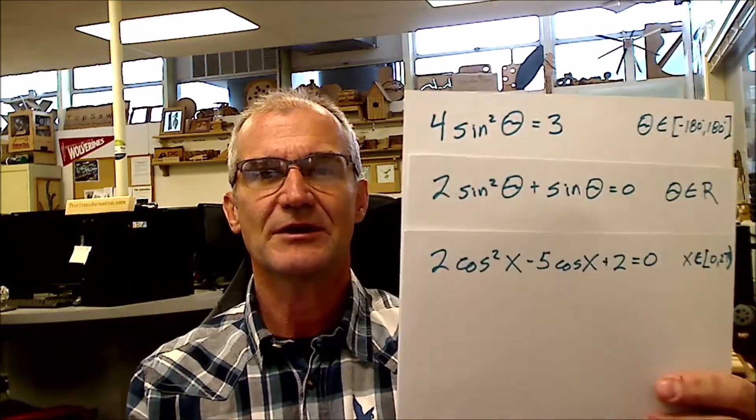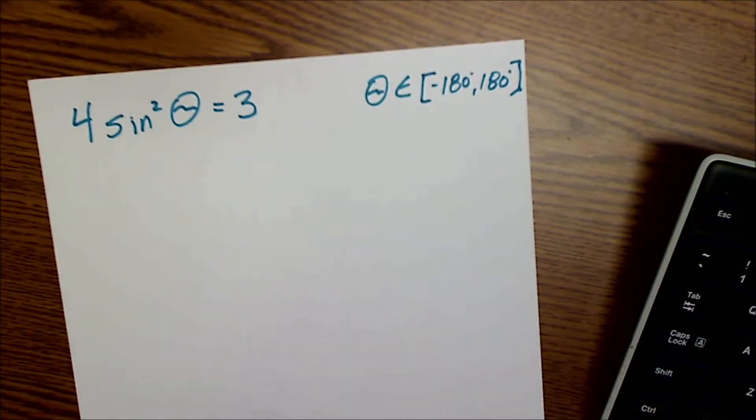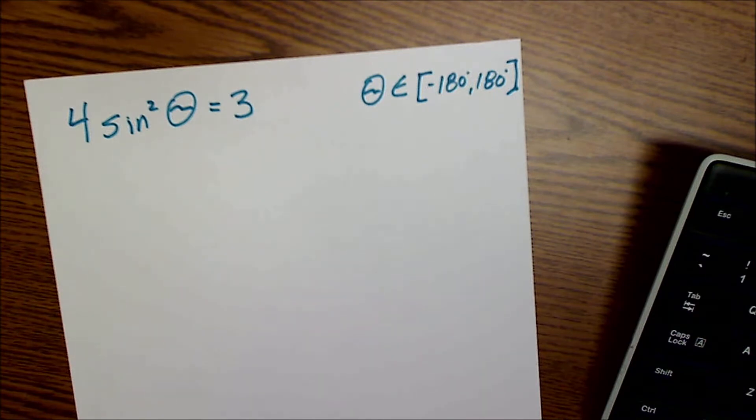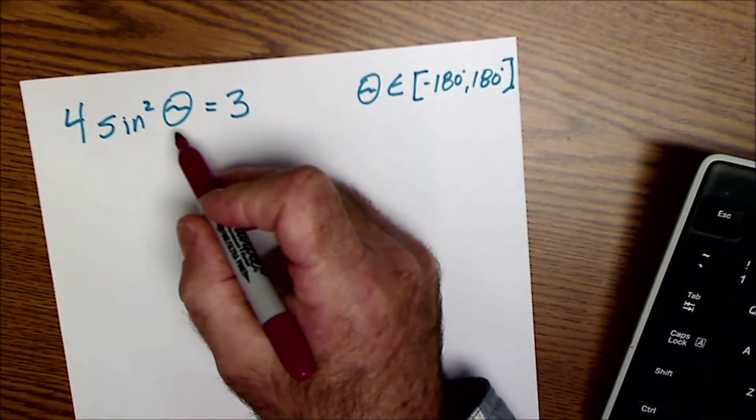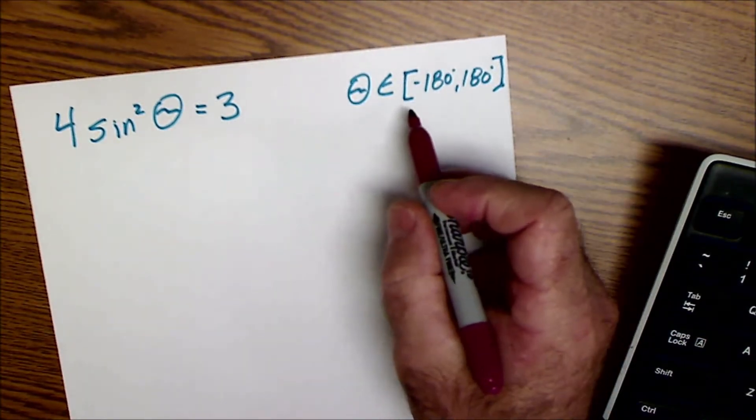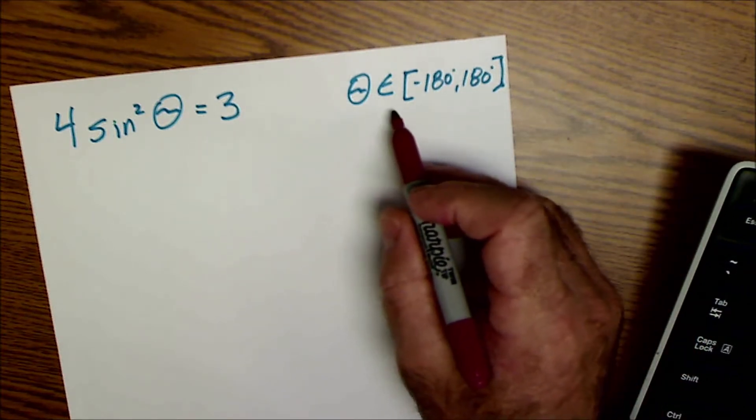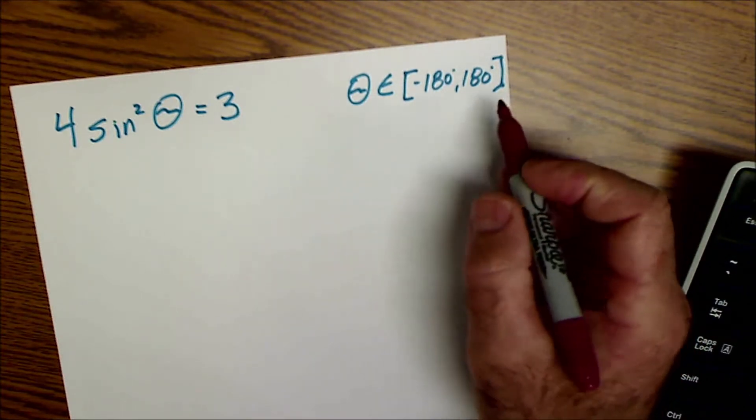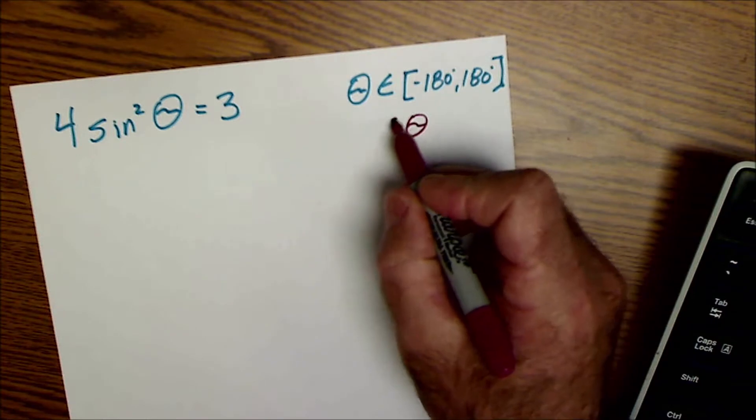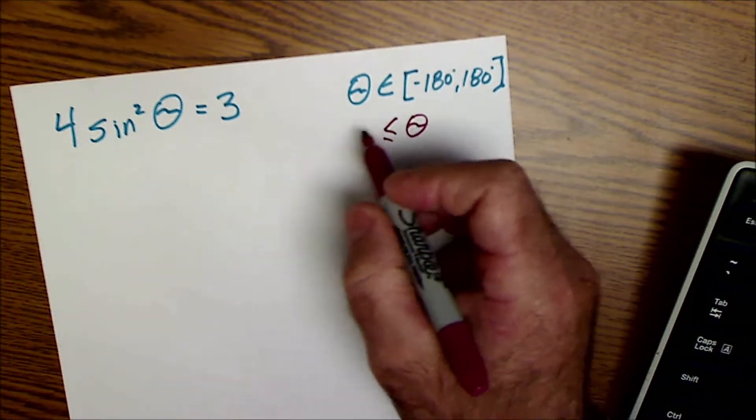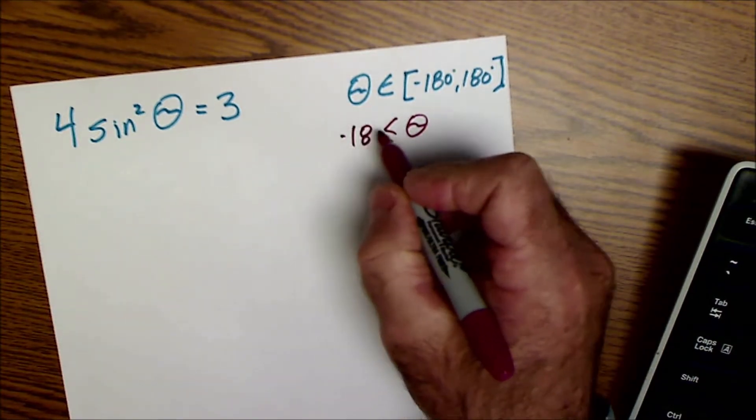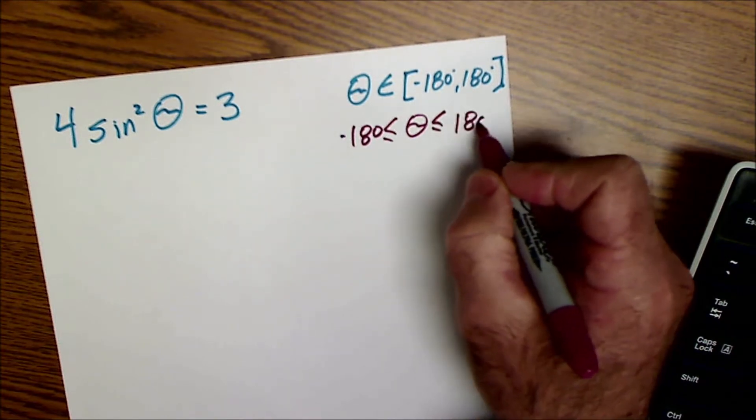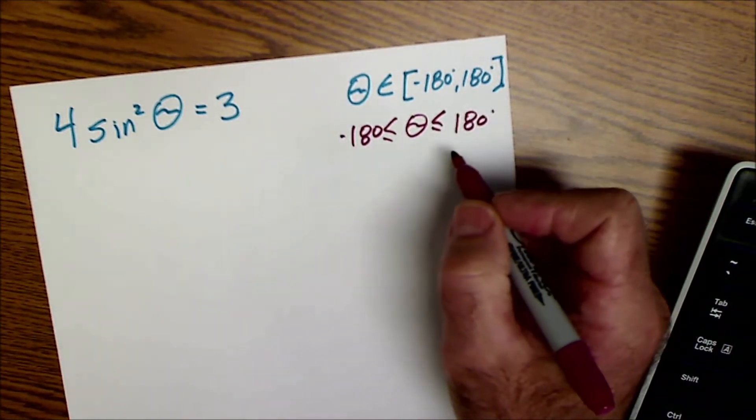Let me put the camera over my shoulder, and we'll get started on the first problem right here. A couple things I note before I even start this is that theta, so this is degrees, there is a domain attached to it that is saying theta is an element of the set negative 180 to 180, which is the same thing as saying theta is greater than or equal to negative 180 or less than or equal to 180. So I only want solutions in that set.